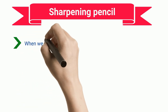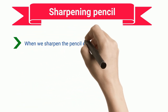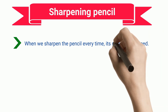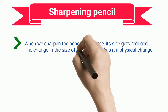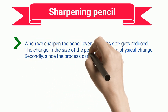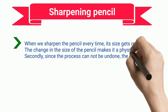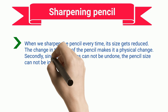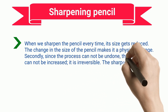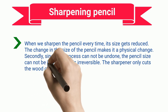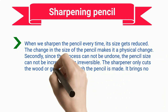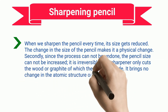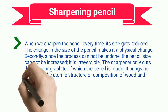Sharpening Pencil. When we sharpen the pencil, its size gets reduced. The change in the size of the pencil makes it a physical change. Secondly, since the process cannot be undone — the pencil size cannot be increased — it is irreversible. The sharpener only cuts the wood or graphite of which the pencil is made, bringing no change in the atomic structure or composition of wood and graphite.